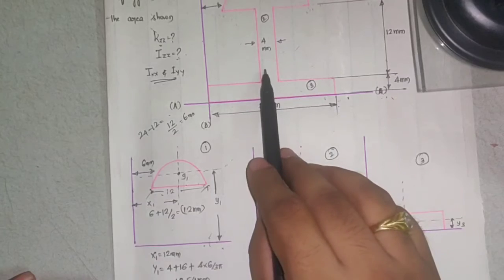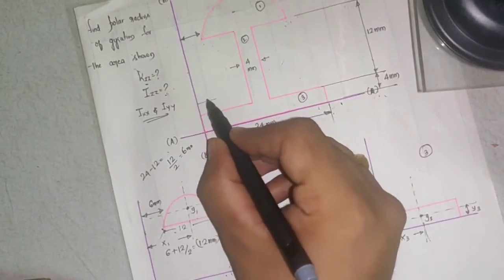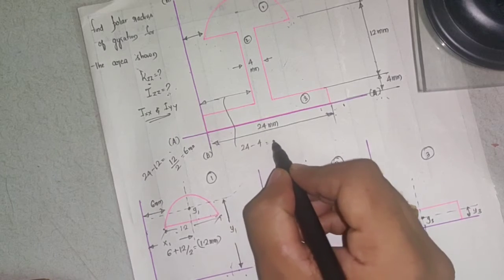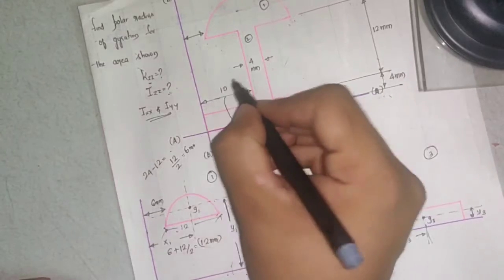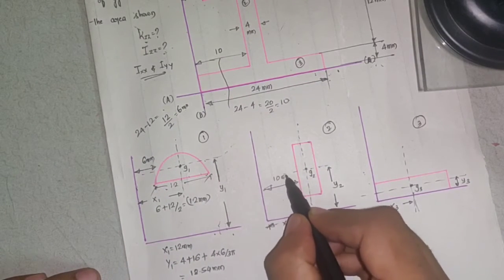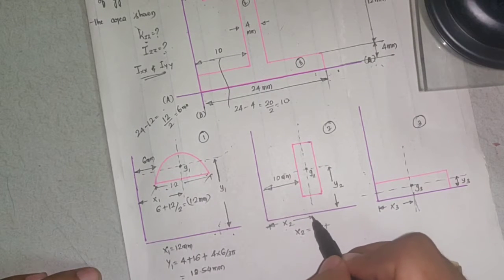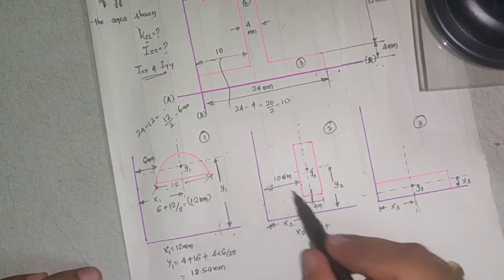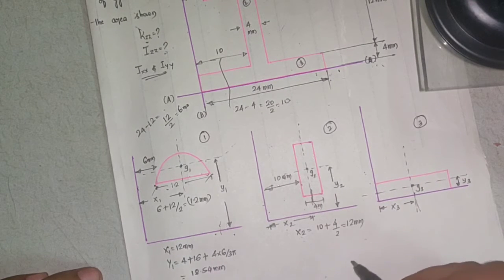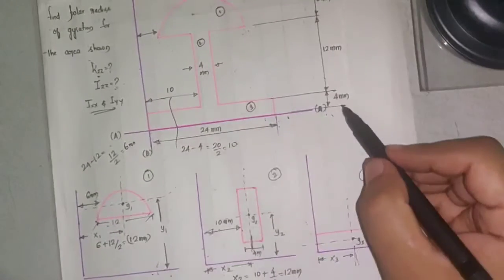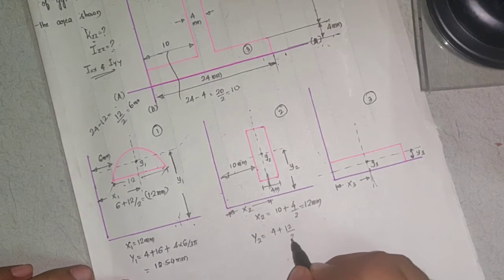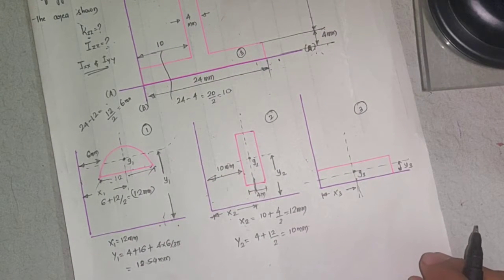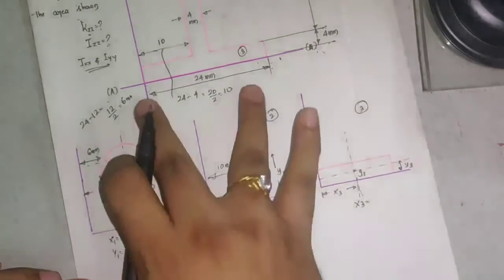For element 2 (rectangle): x2 is calculated as (24 minus 4)/2 = 10 mm for the centroid of the inner span, then x2 = 10 + 4/2 = 12 mm. y2 = 4 + 12/2 = 4 + 6 = 10 mm. For element 3 (base rectangle): x3 = 24/2 = 12 mm, and y3 = 4/2 = 2 mm.